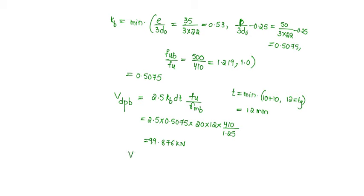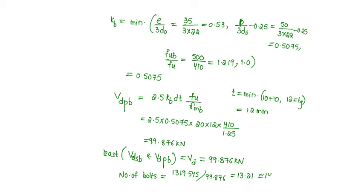So the least of VDSB and VDPB will be equal to design capacity of the bolt VD, that is equal to 99.876 kilonewtons. So the number of bolts required will be equal to TDG, that is 1319.545 by the bolt capacity 99.876, that is equal to 13.21, so 14 bolts are required.